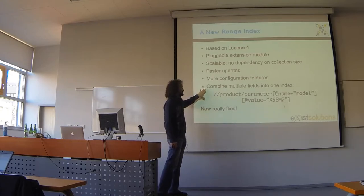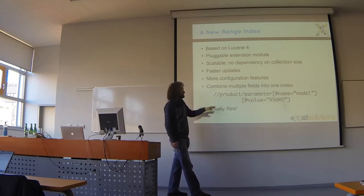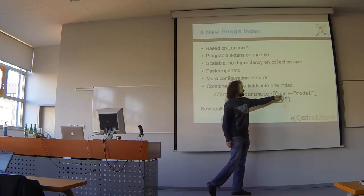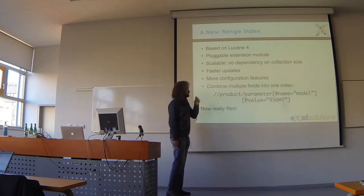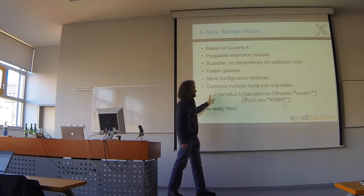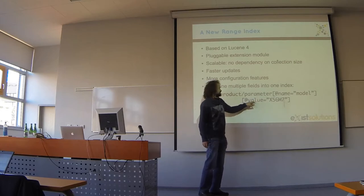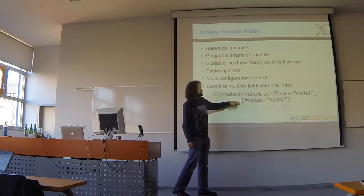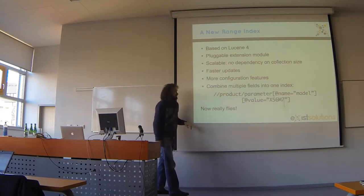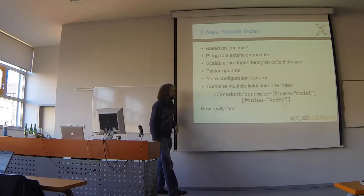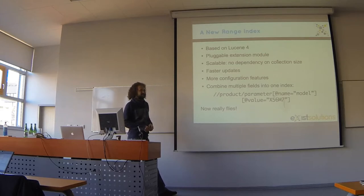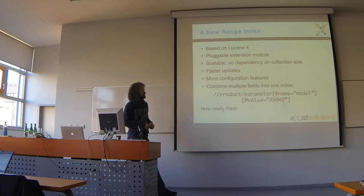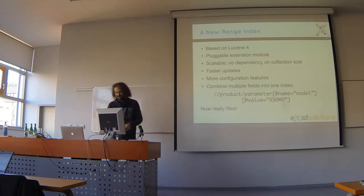We also have a lot more configuration features because we have more features in the back end. One of the most important features is that this index has been designed so you cannot only optimize, for example, the name equals model lookup, but you can pull everything you need into one index. This index is able to process the entire expression with just one index lookup — it replaces the whole expression with a very efficient index lookup which is run just once. The result was that queries can really fly now — some people measured 100 times speed increase on really large databases, improving performance by up to 100 times.